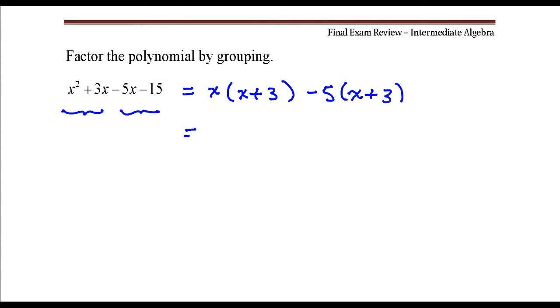The next step is to factor the common binomial out of the entire expression. That binomial is x plus three. So if I factor x plus three out of this first part, I'm left with an x. And if I factor x plus three out of this last part, I'm left with minus five.